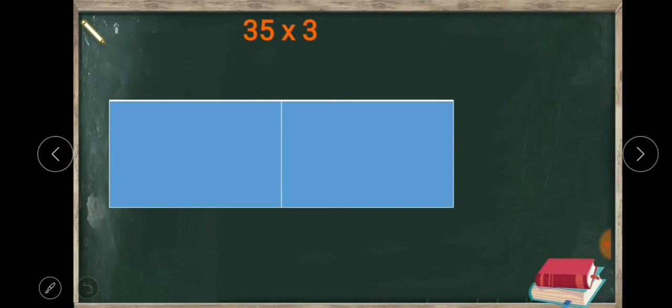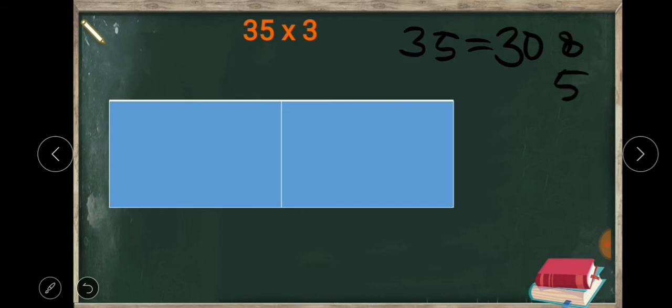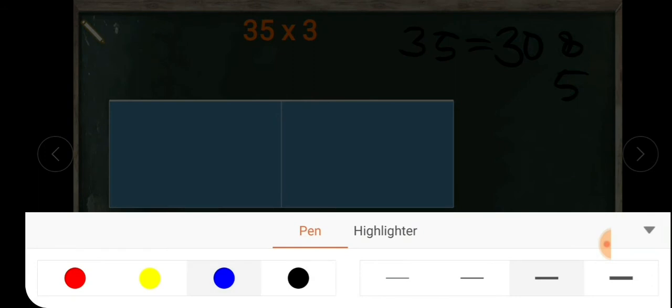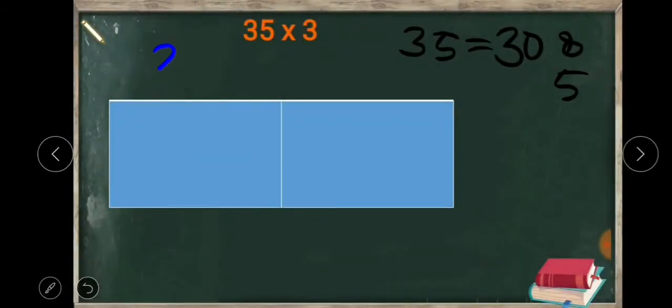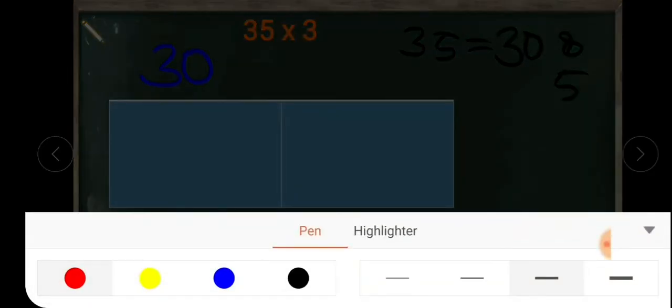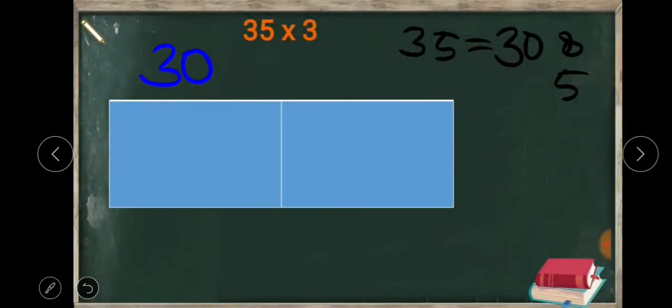Here we have another question: 35 into 3. We need to find the product of 35 and 3. We can break 35 as 30 and 5, since 30 plus 5 is 35. So we break it as 30 and 5.